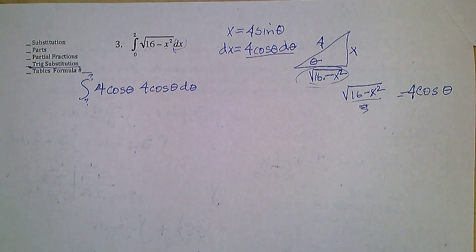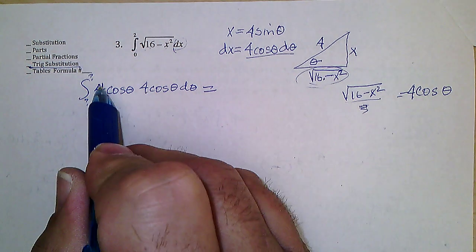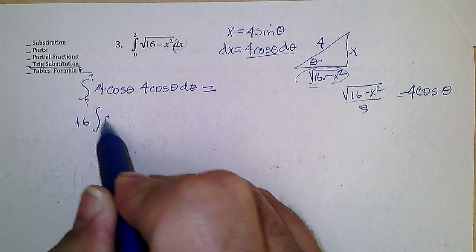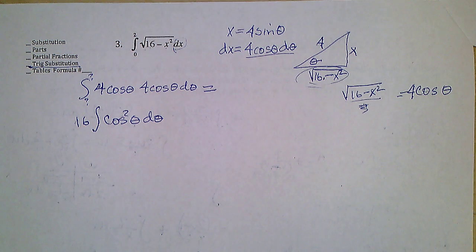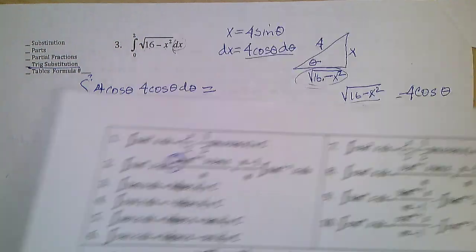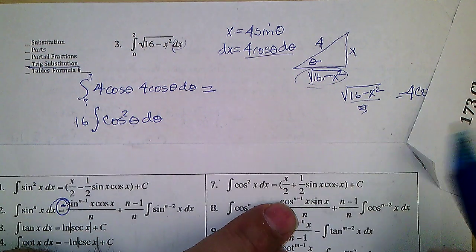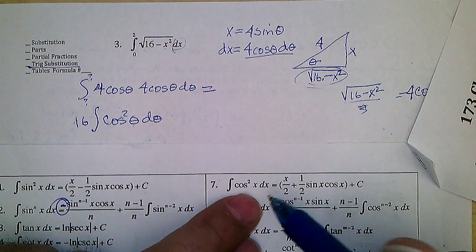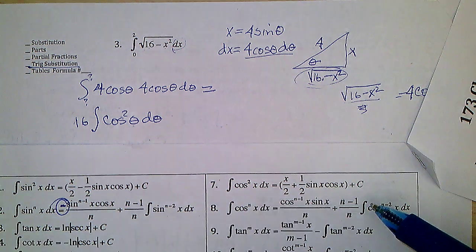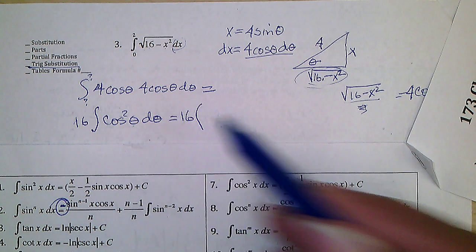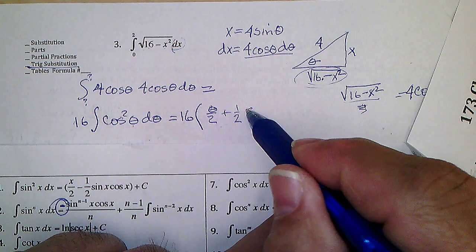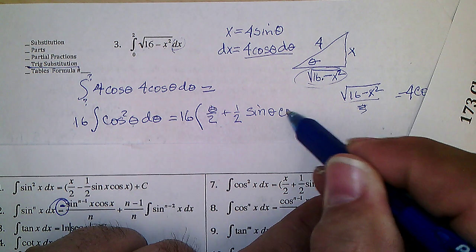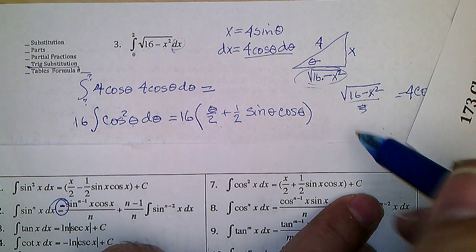Changing to theta, the limits change. We have √(16−x²) = 4 cos θ and dx = 4 cos θ dθ. Many of you got that far. So 4×4 = 16, giving 16 times the integral of cos²θ dθ. At that point I expected you to look up the cosine-squared formula on the formula page.